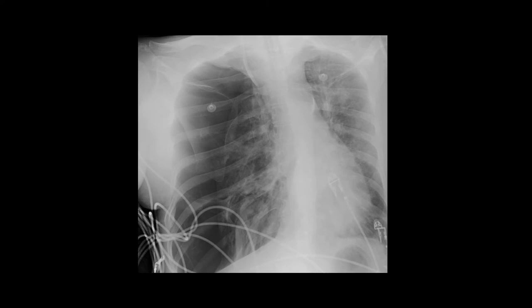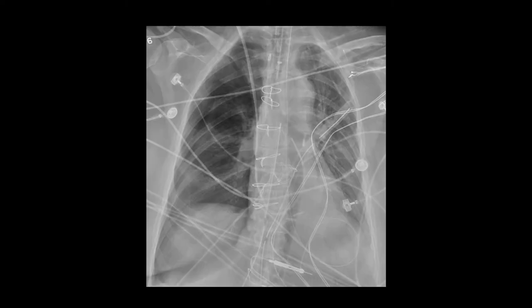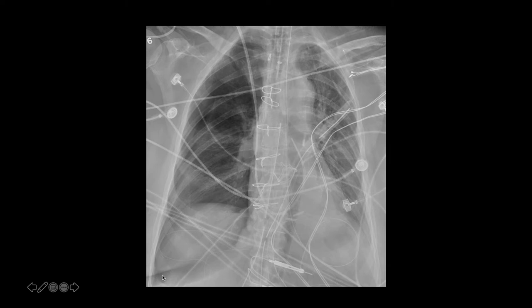Here is an example of a tension pneumothorax, which should be pretty obvious: there's mediastinal shift towards the left, a large air collection, and the hemidiaphragm is depressed. Here is another example of a pneumothorax illustrating the deep sulcus sign — you can see abnormal lucency down in the right base. In a supine patient, air collects anteriorly, and the most anterior part of the hemithorax is actually the more inferior part, so air can collect there and cause a deep sulcus sign.